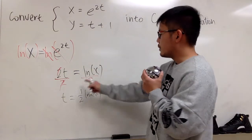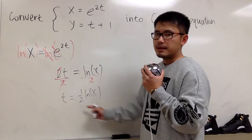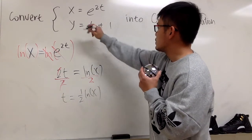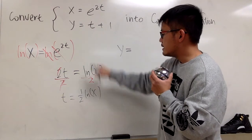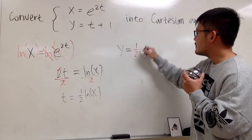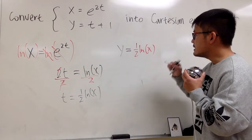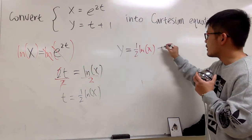Once we have the t equation right here, I can plug in this into this t, so we have y is equal to, this t is now 1 half lnx, and then at the end, we have the plus 1.